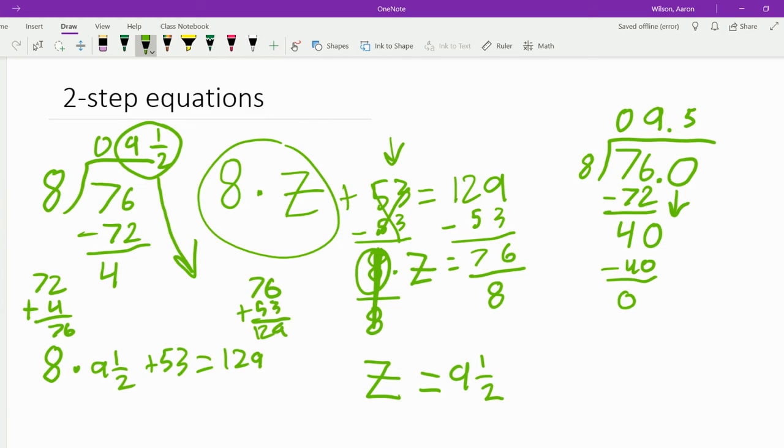And what is the answer over here? 129. So we have the answer to Z. Z equals 9 and 1 half.